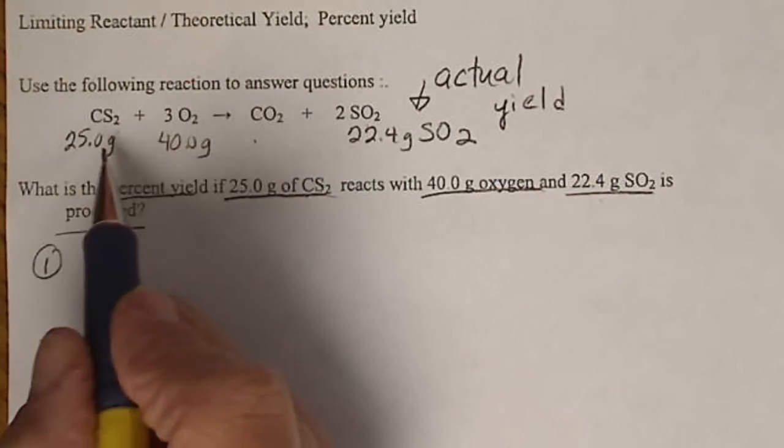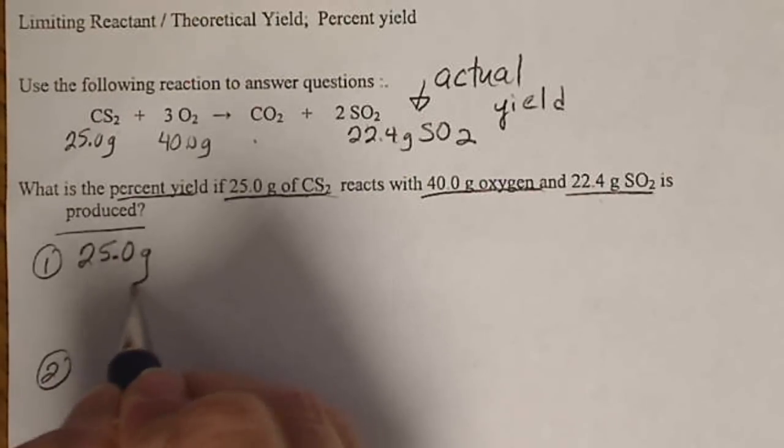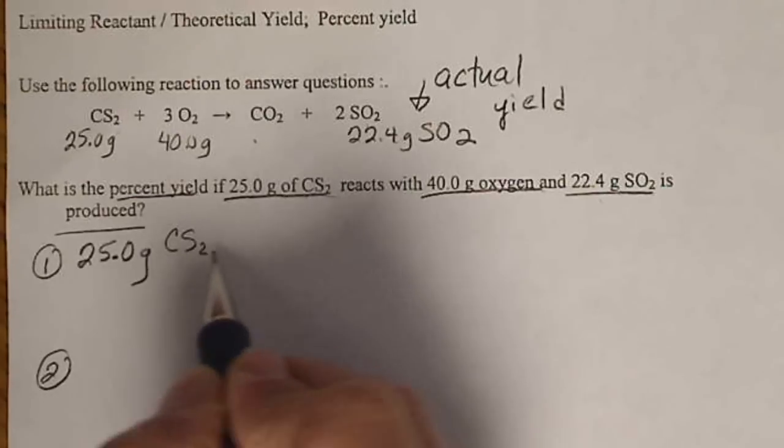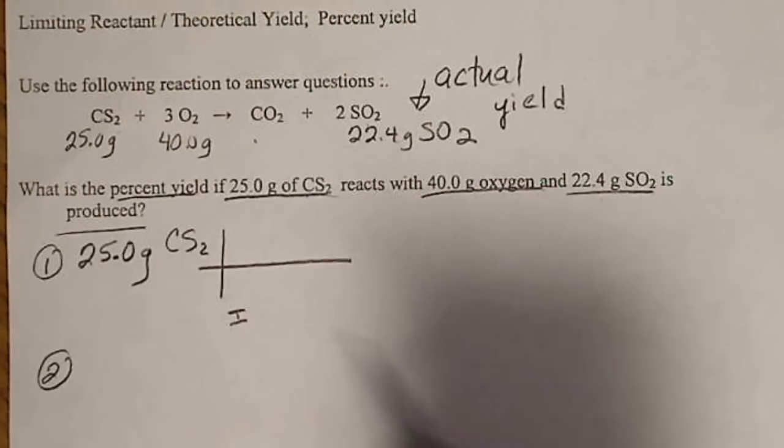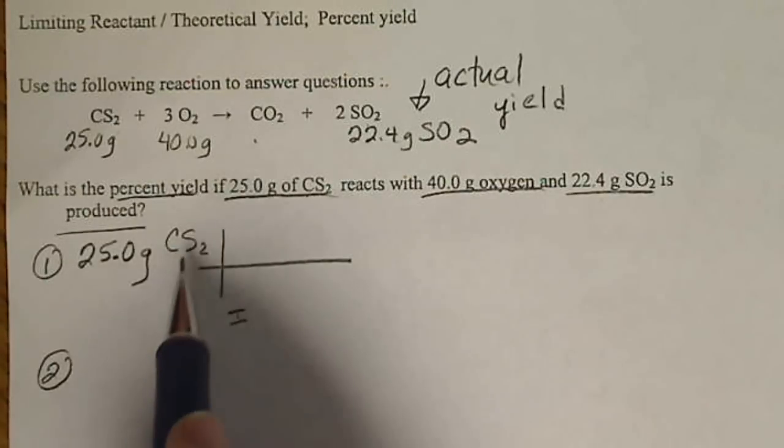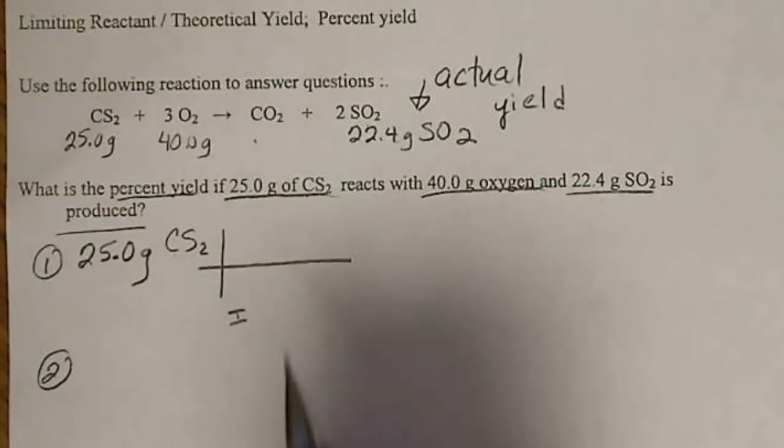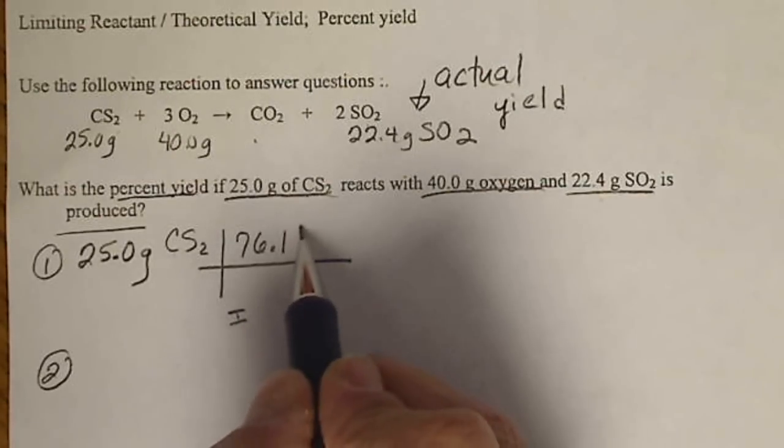We'll take reactant 1, which is 25.0 grams of CS2. We'll get out the periodic table to do step 1, the molar mass. The molar mass of CS2 is 1 carbon plus 2 sulfurs. The masses of those add up to 76.15 grams.